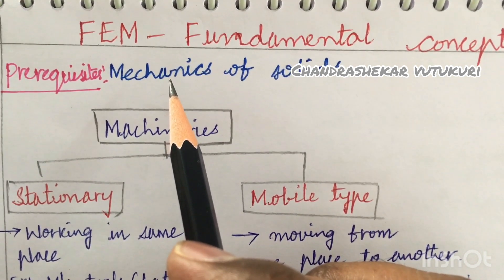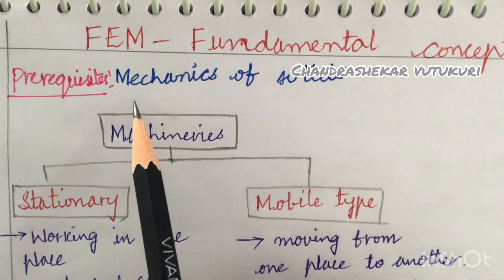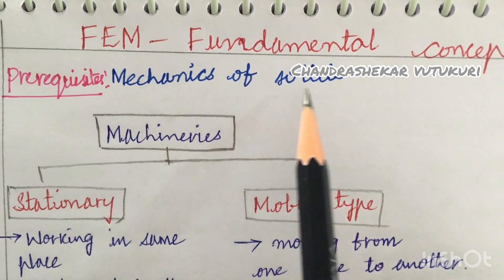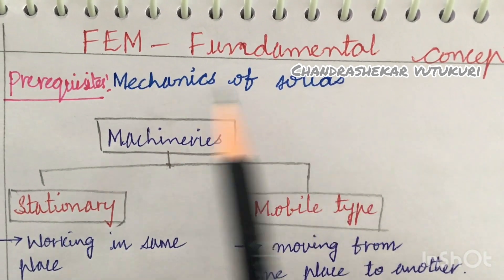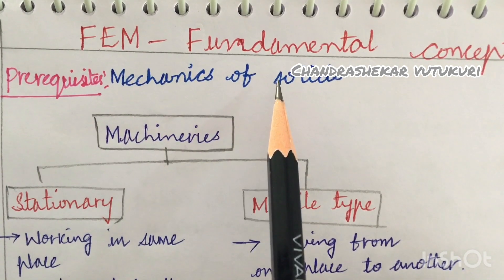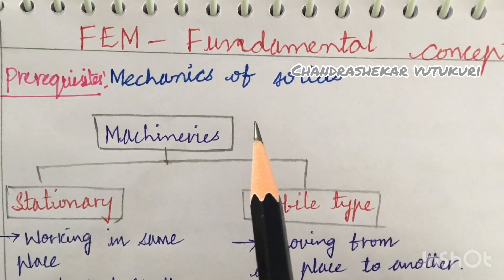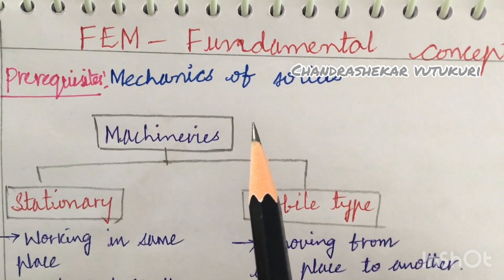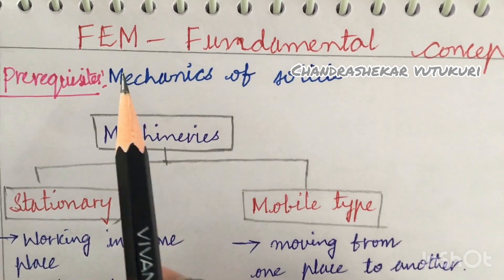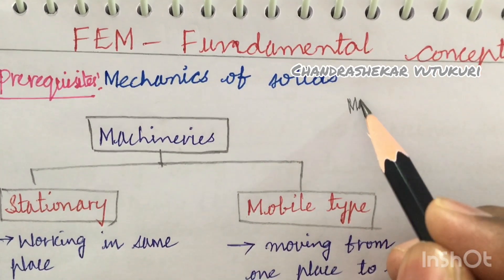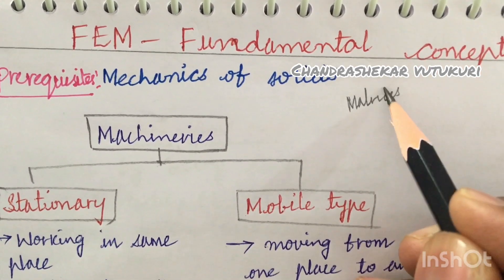Before studying this course, civil, mechanical, or aeronautical engineers should have studied mechanics of solids in previous years. Those basic fundamentals should be strong. Also, certain physics concepts as well as mathematical relations are used in this course.